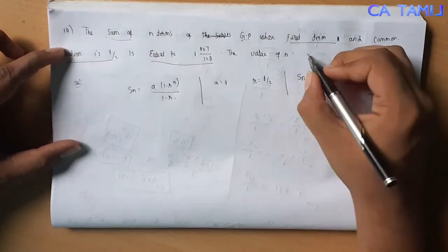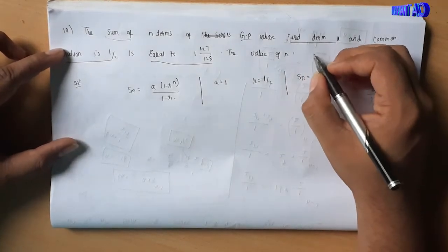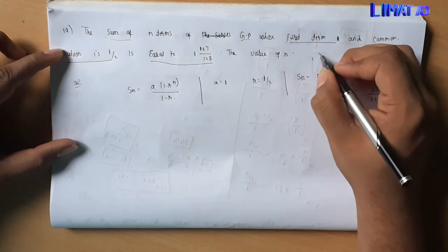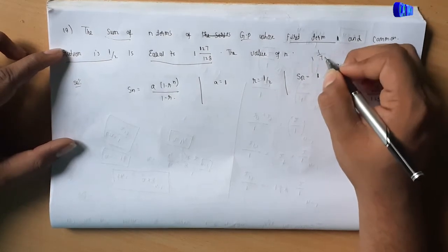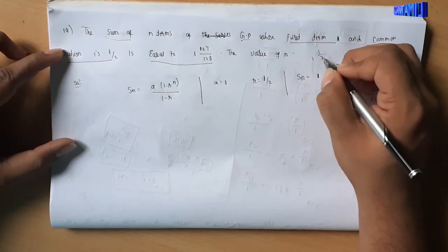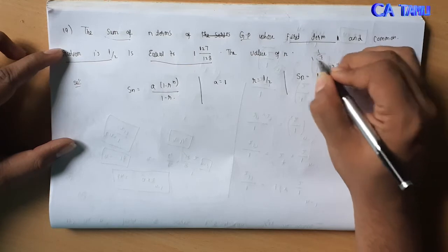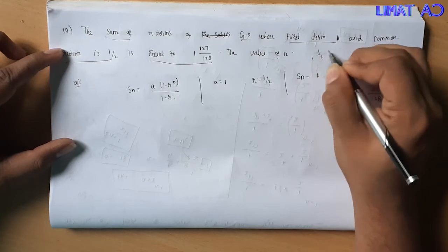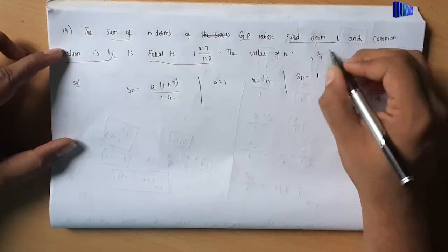To clarify the mixed fraction conversion: 1 and 1/7 as a mixed fraction — 7 plus 1 is 8, giving 8/7. Similarly here, 1 and 127/128 converts to 255/128.